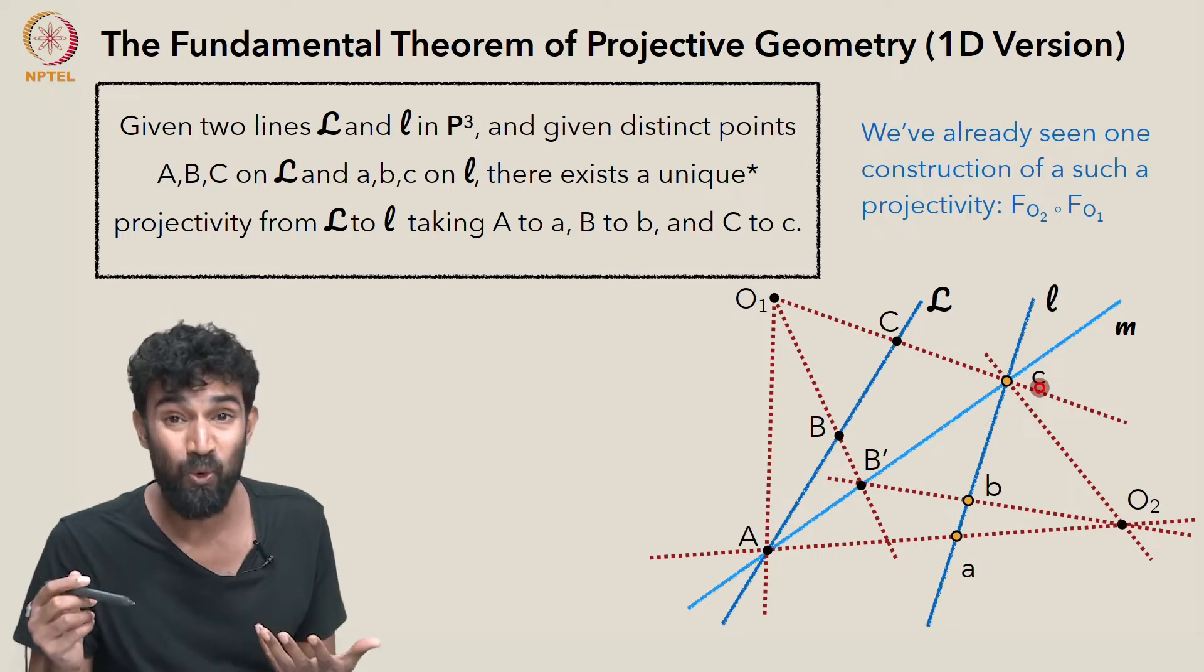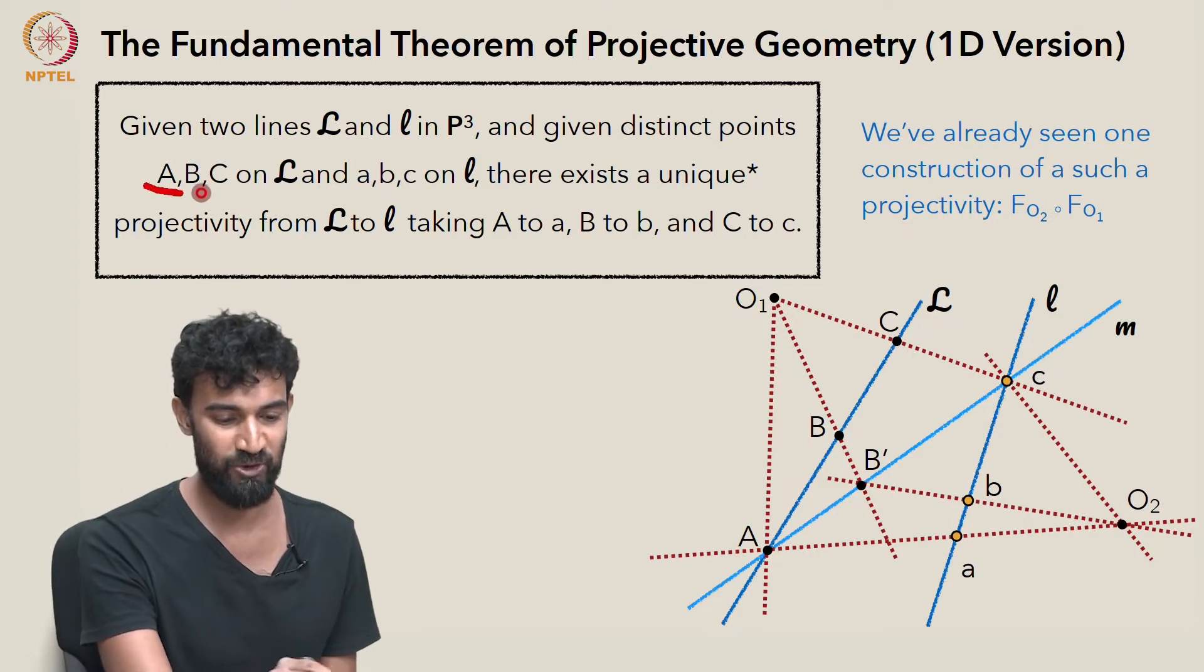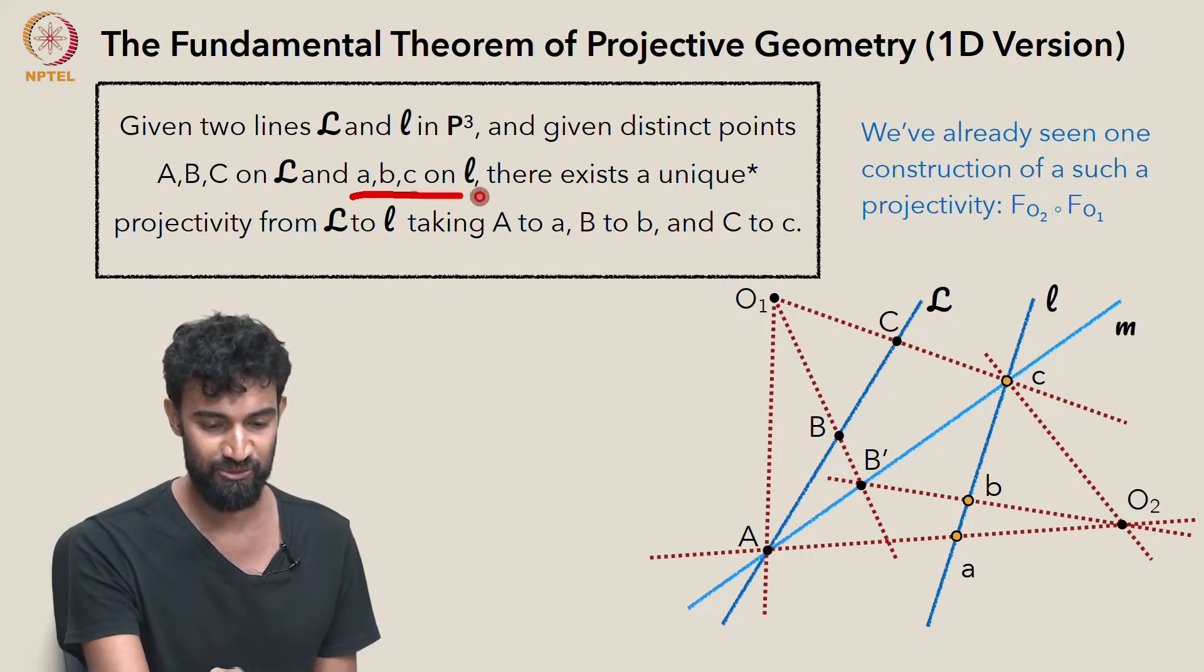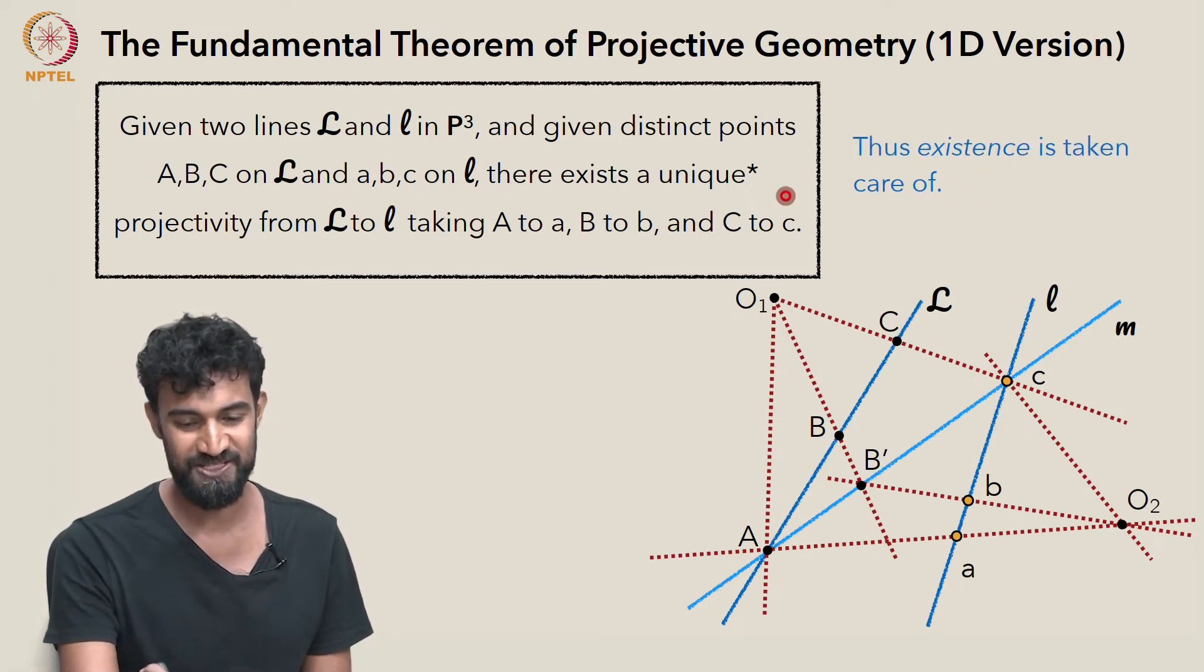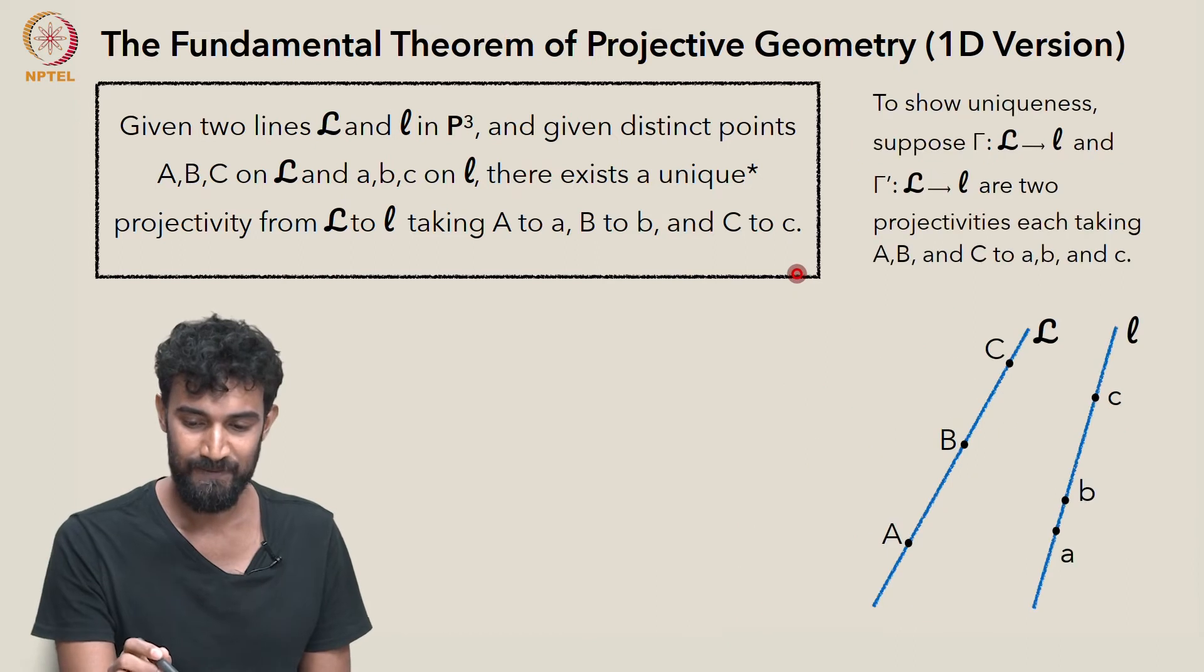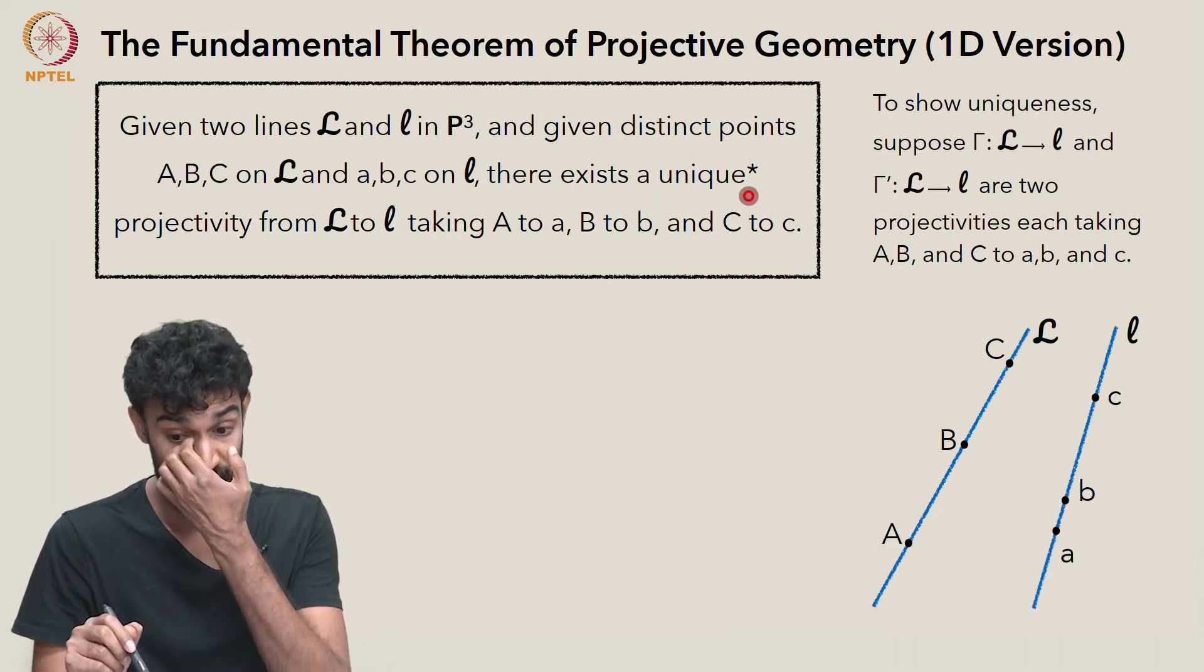So we've seen one such projectivity, which takes three points on L to an arbitrary three points on little l. So the existence part of this theorem we've already done. But to show the uniqueness part, to show that this is a unique projectivity,